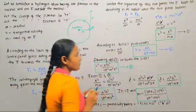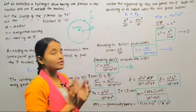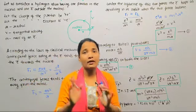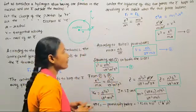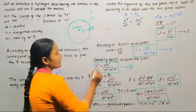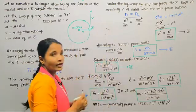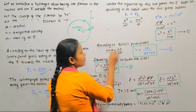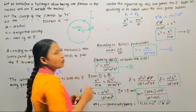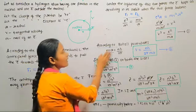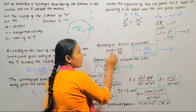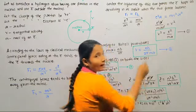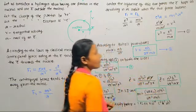Now, according to Bohr's postulates — that is the third Bohr's postulate — angular momentum is an integral multiple of nh by 2 pi. So, mvr is equal to nh divided by 2 pi. We want to take the v value, so v is equal to nh divided by 2 pi into mr. Call it equation number 2.